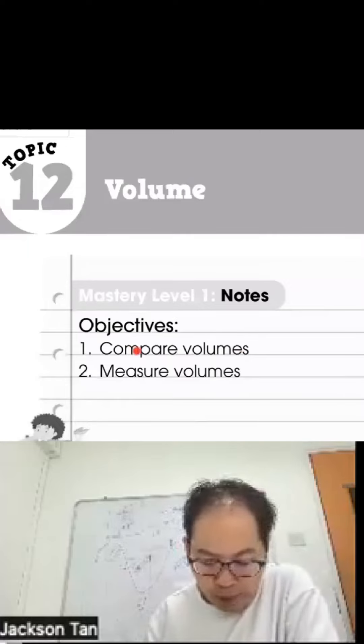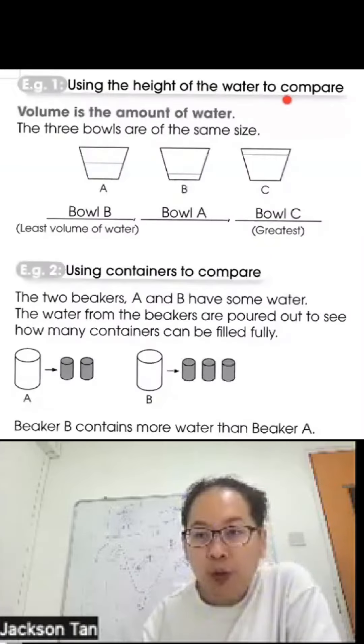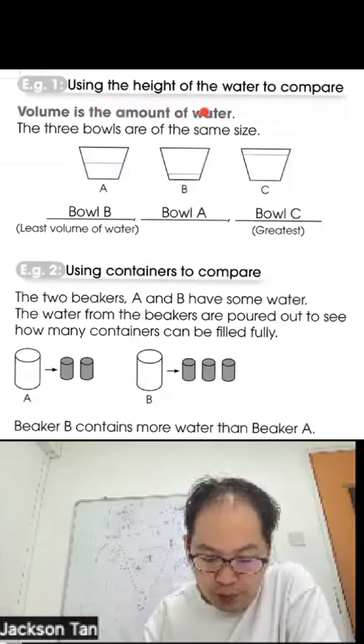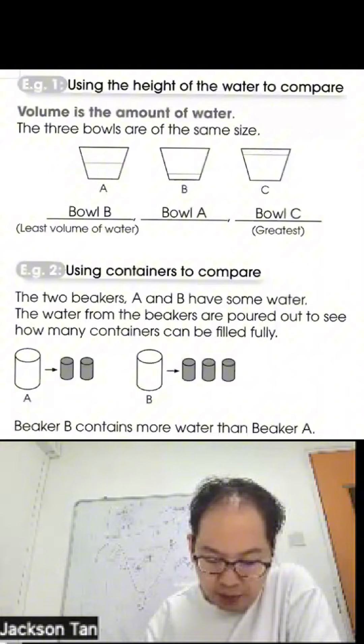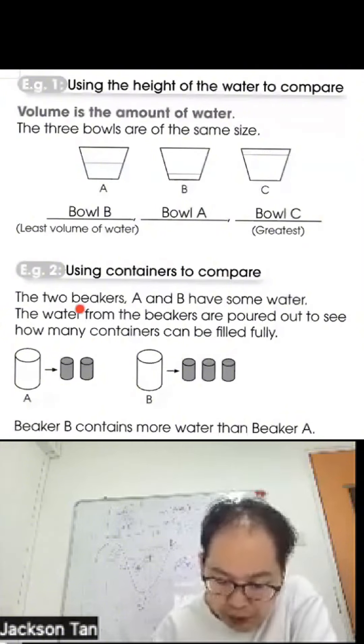Welcome to learning about volume. Objective: to compare volume and measure volume. Using the height of the water to compare - volume is the amount of water. If the three bowls are of the same size, then we look at the height. You can see that C is the highest, B is the lowest, so B has the least volume of water followed by A, followed by C.